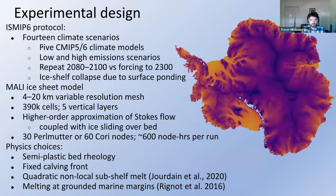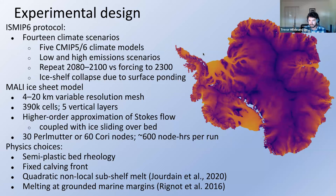We're following the ISMIP-6 protocol, which includes 14 different climate scenarios spanning five different climate models, low and high emission scenarios, and repeated forcing from the end of the 21st century versus explicitly modeled forcing out to 2300. A small subset of runs uses a parameterization for collapse of floating ice shelves based on surface melting, which can drive hydrofracture and rapid ice shelf breakup—observed in Greenland and projected to be important further south in the coming centuries.